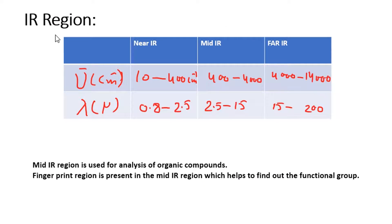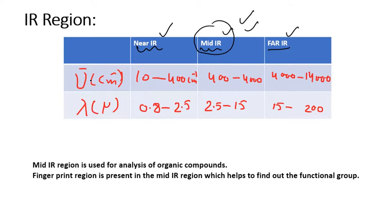The IR region is further divided into three types of regions: the near IR region, mid IR region, and far IR region. The mid IR region is the most important. The wavenumber range for near IR is 10 to 400 per centimeter, mid IR is 400 to 4000 per centimeter, and far IR is 4000 to 14000 per centimeter.